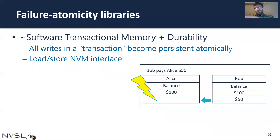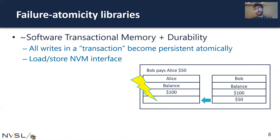This is generally the job for what we term failure atomicity libraries. If you're familiar with software transactional memory, this is basically software transactional memory plus durability. We can identify particular code regions called transactions, and all of the writes within a transaction should become persistent atomically — all of the writes survive a power outage or none of them. For example, when Bob is paying Alice $50, we decrement Bob's account and increment Alice's account, and money should never leave or get added to the system.